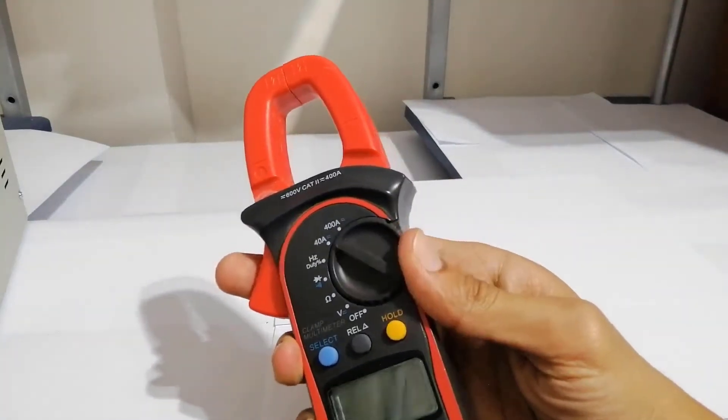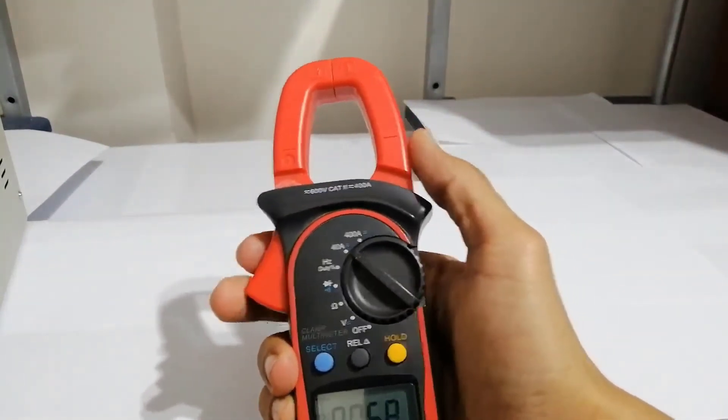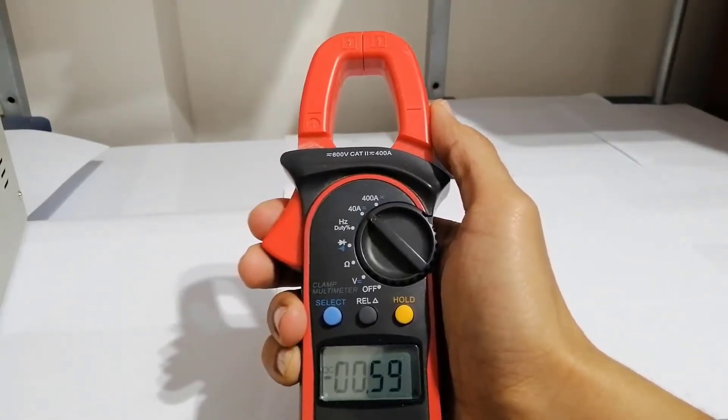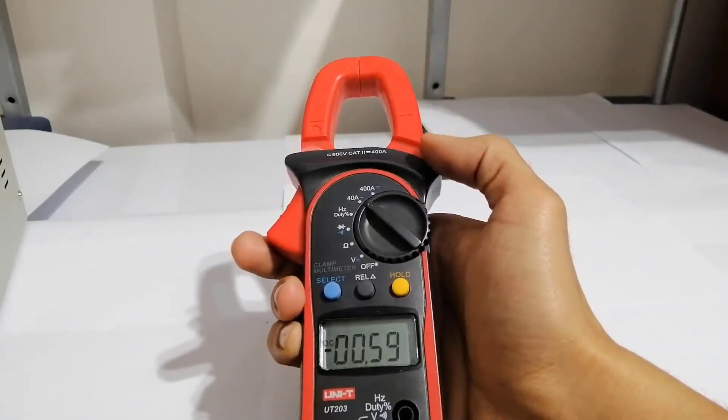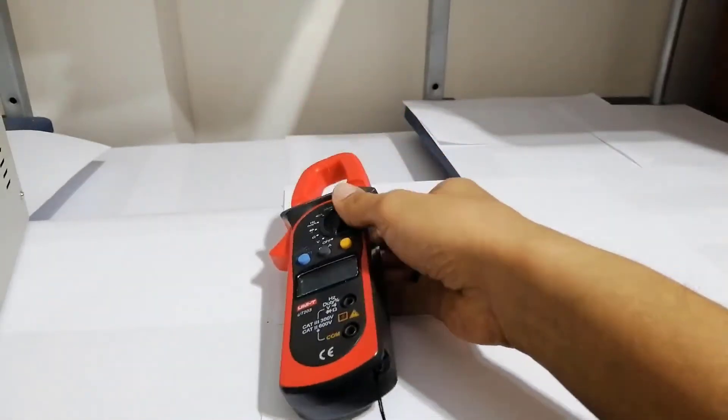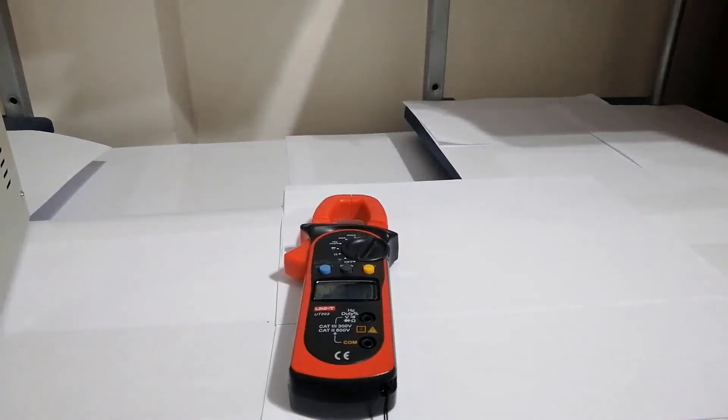To measure current, we just need to change the selector to amps measuring and open this clamp and put any wire we want to measure the current on around this wire. Stay tuned to our Ultimate Industrial Classic Control course on YouTube.